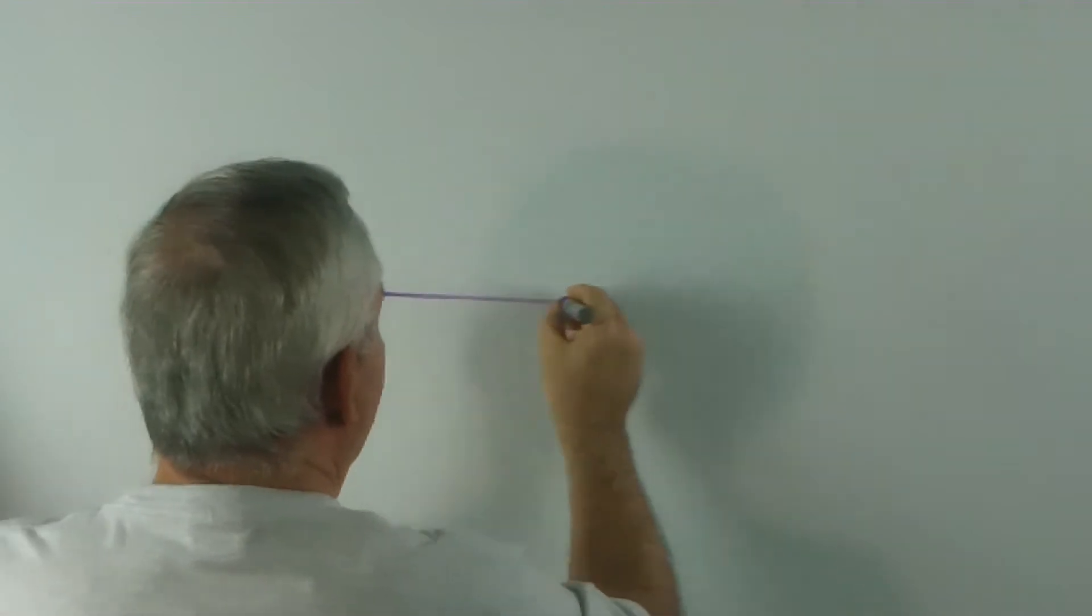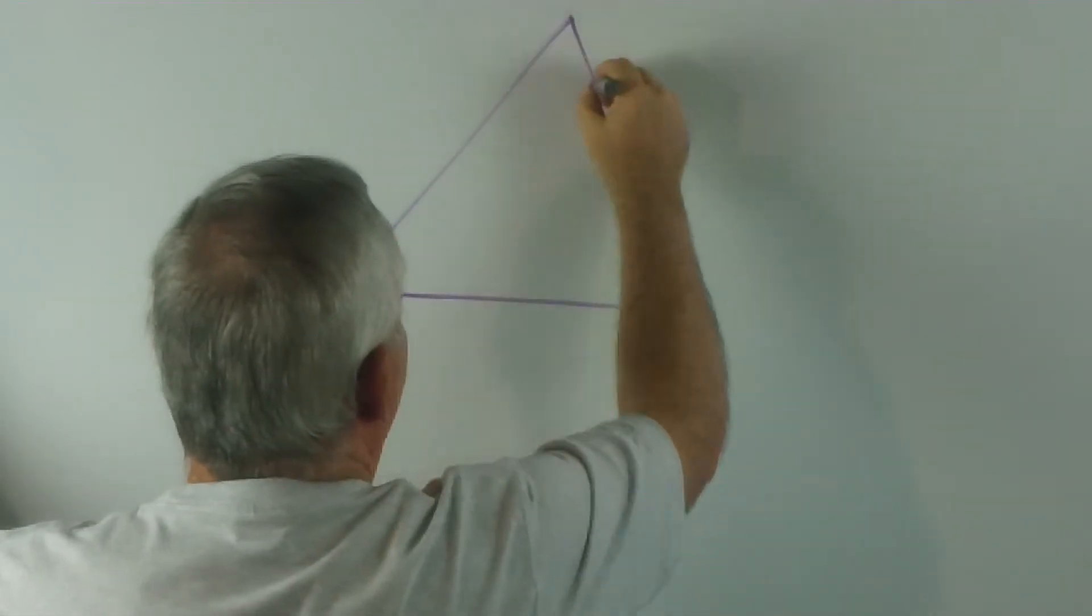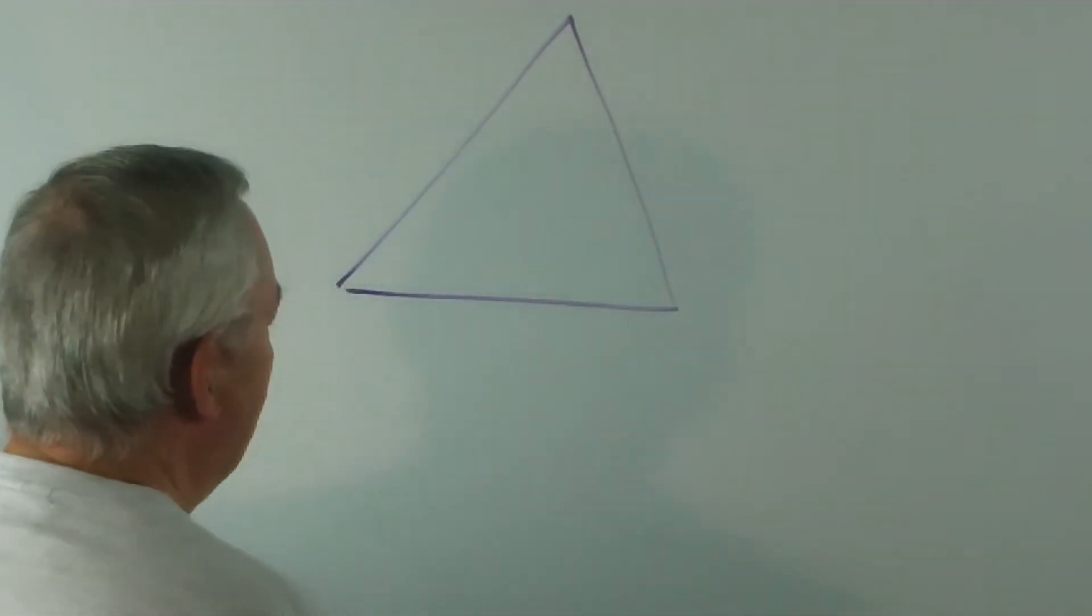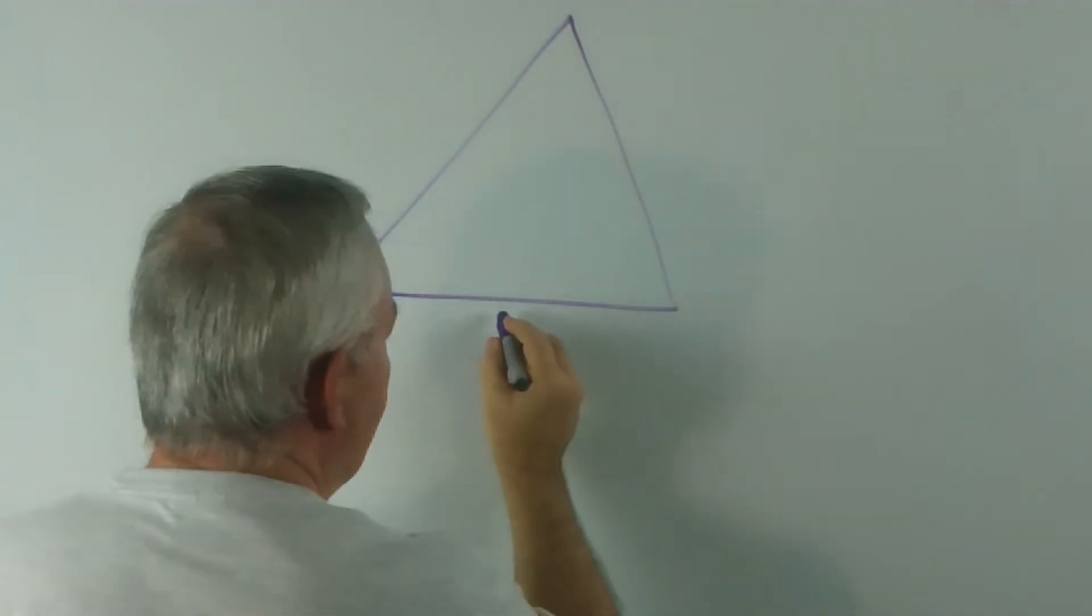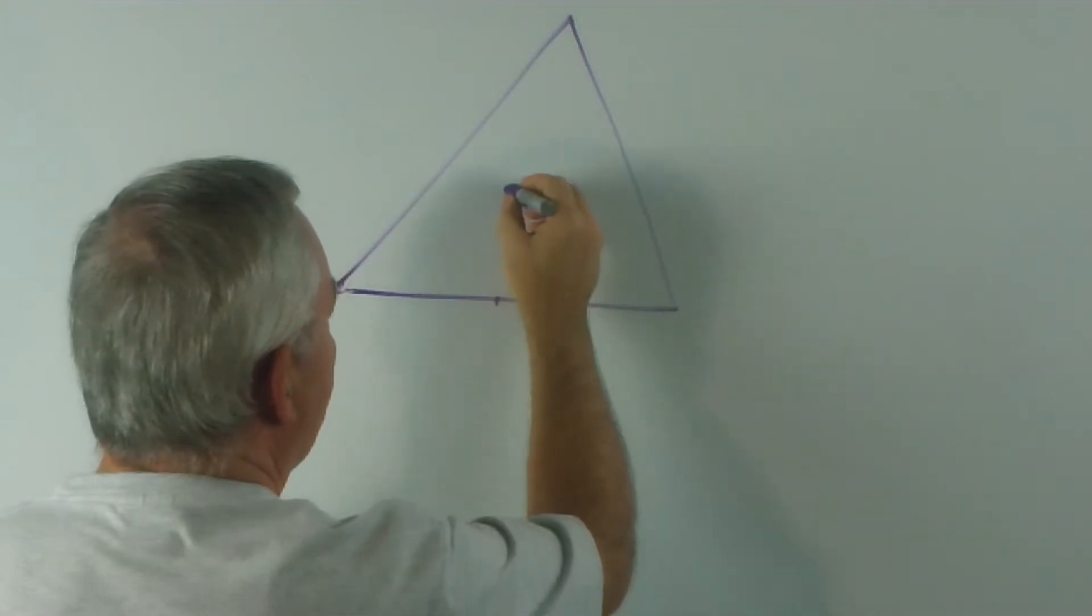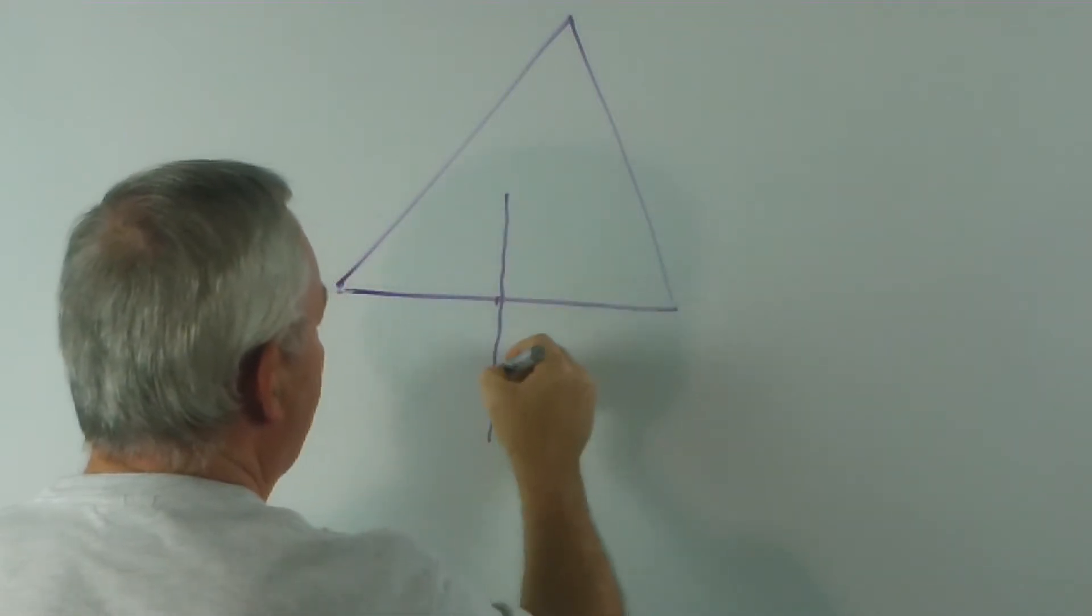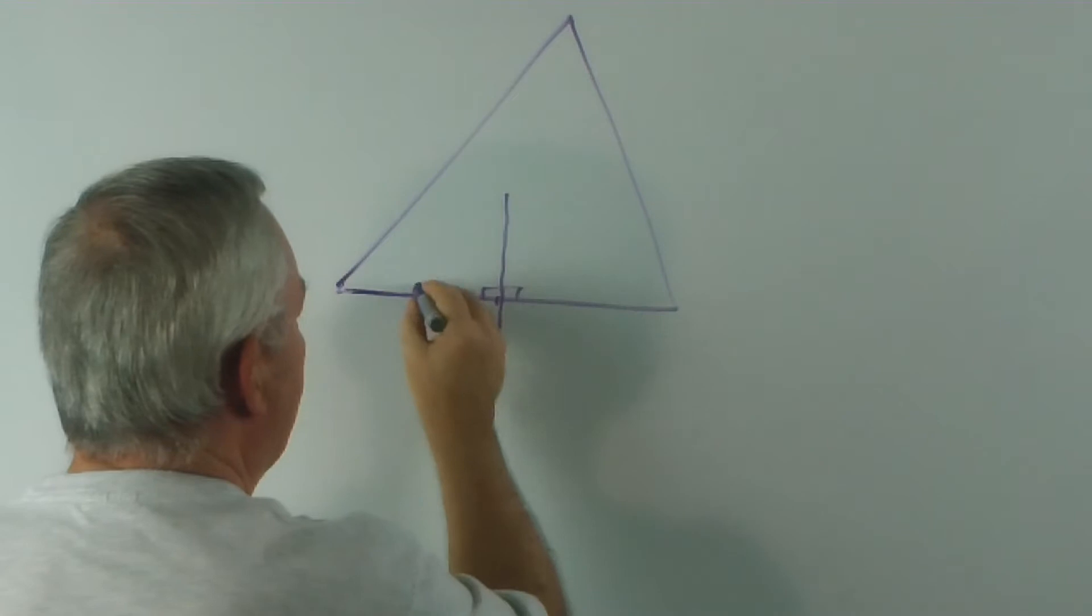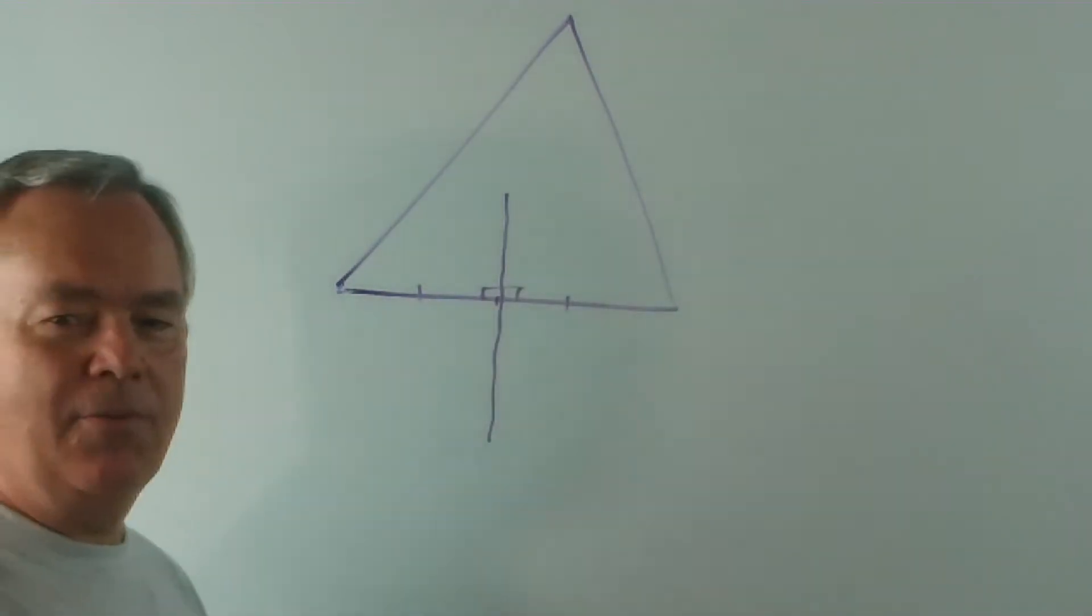We draw a triangle. First construction, we find the perpendicular bisector of the base. So I'll try and draw it in here. These are right angles, and that length equals that one. So far, so good.